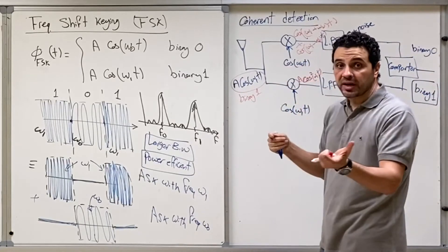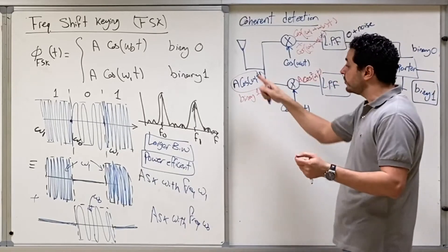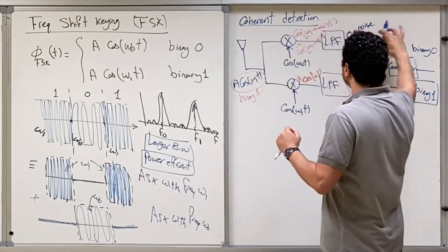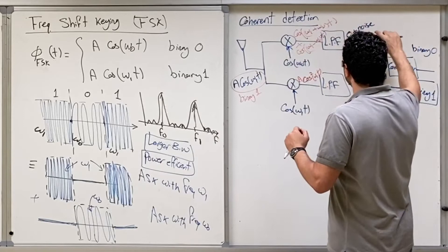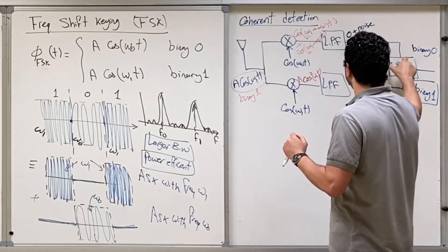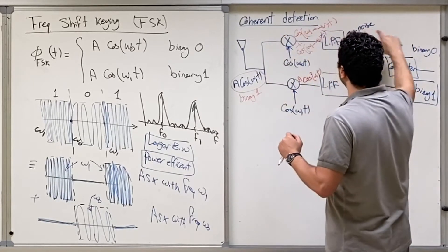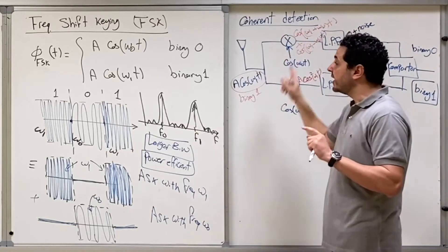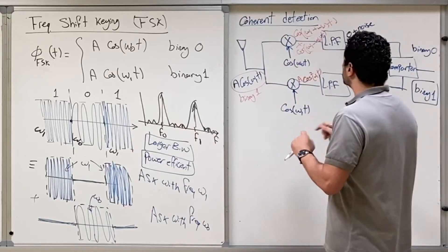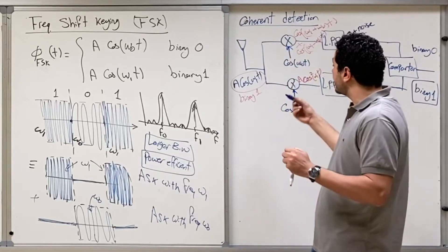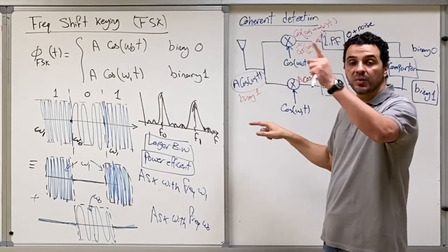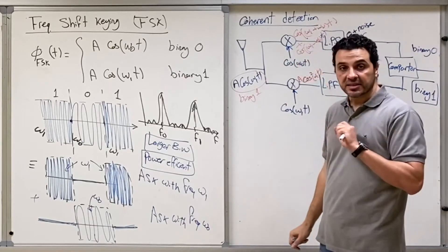In another case you should try yourself: if you receive cosine omega-zero t, the upper branch signal will be higher than the lower branch signal, and hence the receiver will decide that the active branch is binary zero. This is called coherent detection because we must provide a carrier perfectly synchronized with the transmitted carrier.